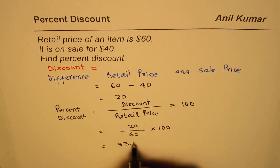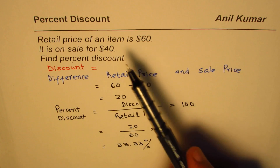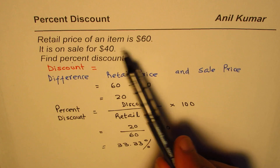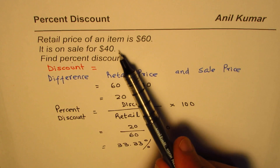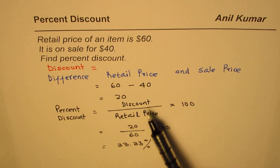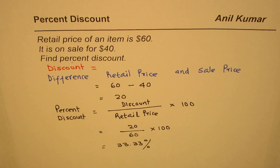That gives us thirty-three point three three percent. So the steps involved are: find the discount by calculating the difference between the retail price and the sale price, then find percent discount using the formula — discount over original price times one hundred. I hope that helps, thank you and all the best.